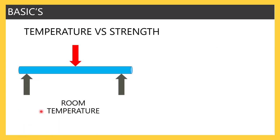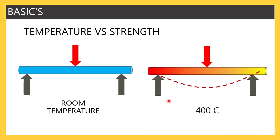Let's understand this with a practical example. Take a rod and place it between supports at room temperature — around 21 to 27 degrees Celsius. Now take another rod where you have increased the temperature to around 400 degrees Celsius. In the rod at room temperature, if you place a little more weight, you will see no deflection because it is solid, rigid, and cannot deflect. But at 400 degrees Celsius, it is already in a very soft, flexible mode. If you place any weight, the rod will sag. That's because increasing the temperature causes it to lose strength.